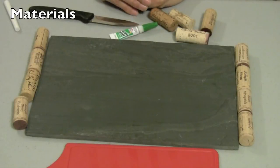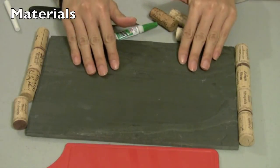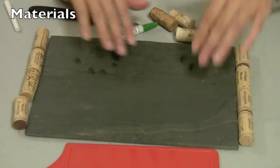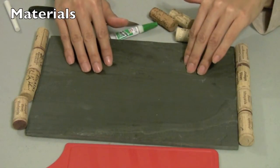The materials used in this project are: this is a slate tile purchased at our local flooring store. It's about 12 inches by 8 inches. It's up to you what size you want to purchase.